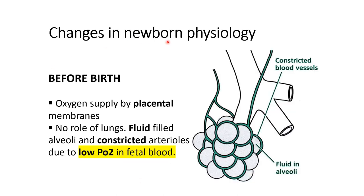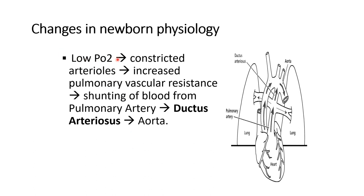What are the changes in newborn physiology that occur? Before birth, the fetus is totally dependent on placental circulation, so all oxygen supply occurs through the placental membrane. During fetal life there is no role of the lungs for oxygenation. The alveoli are fluid-filled and pulmonary vessels are constricted, which leads to low PO2 in the fetal blood. Because of low PO2, these arterioles remain constricted, increasing pulmonary vascular resistance. This causes shunting of blood from the pulmonary artery through the ductus arteriosus to the aorta, as visible in the image.